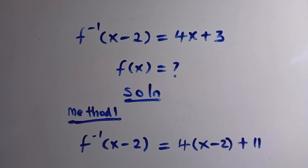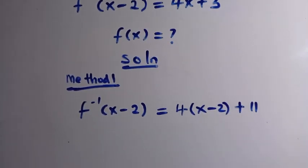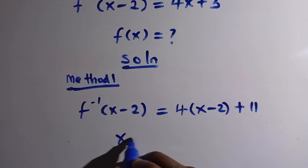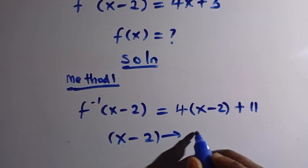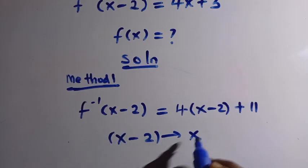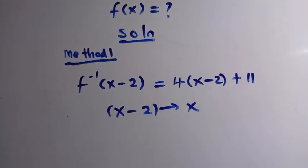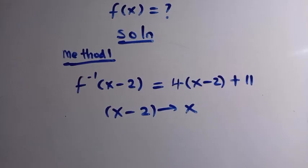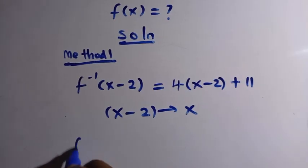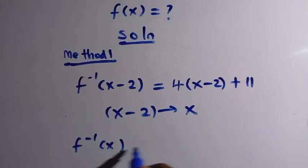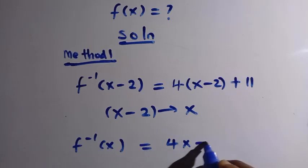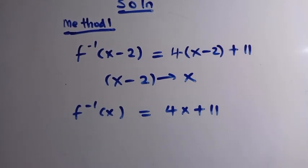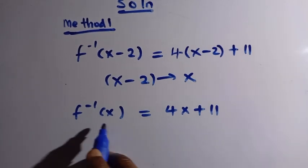When we add 11 we get 4(x minus 2) plus 11 equals 4x plus 3. We can now replace the domain x minus 2 with just x. By making that replacement, we get f inverse of x equals 4x plus 11.